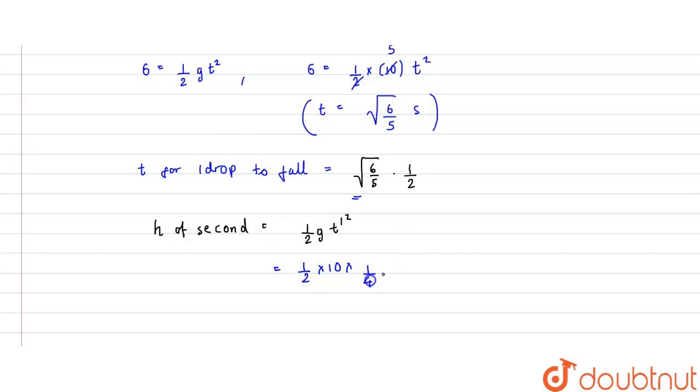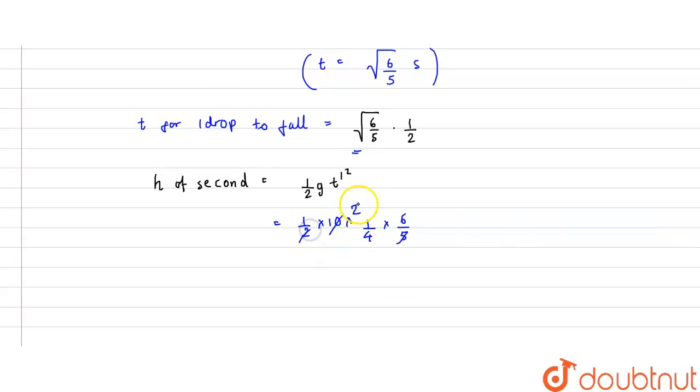1 by 4 into 6 divided by 5, this goes for two times, and this also cancels. So we get h is approximately equal to 1.5 meters. So this will be the answer to our question. Thank you.